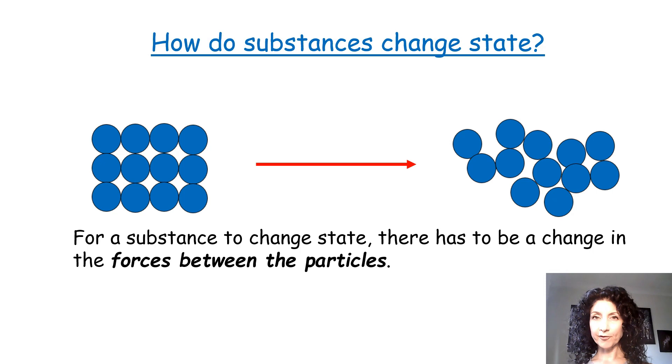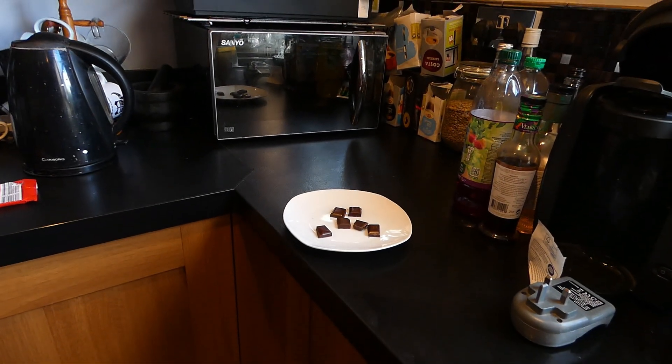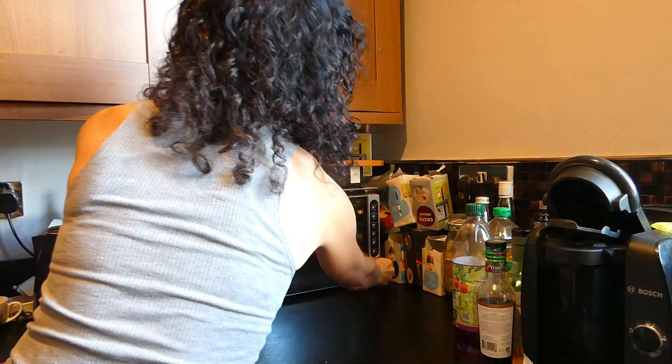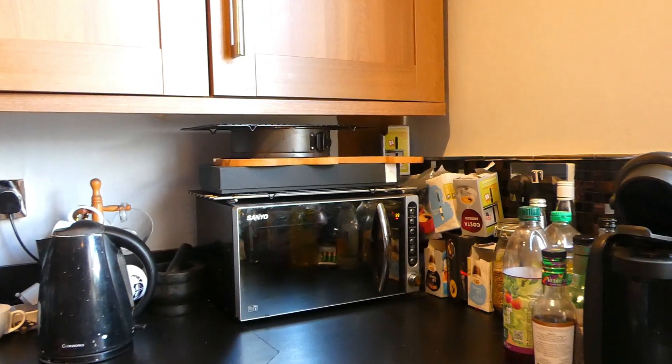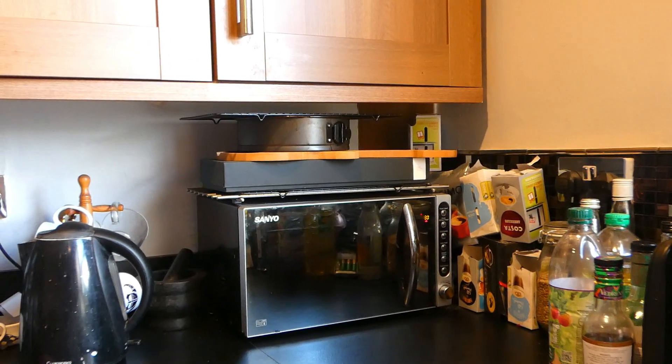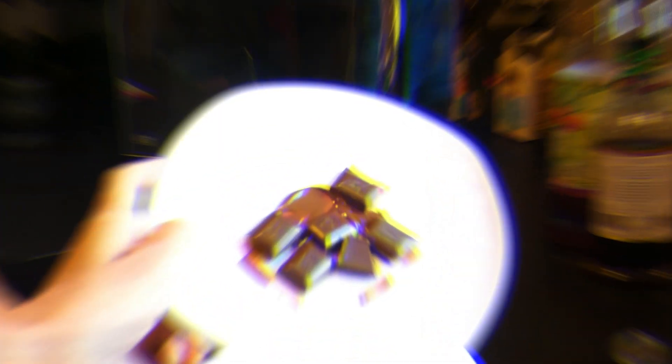For a substance to be able to change state, there has to be a change in the forces between the particles. This might be nice to demonstrate with a bar of my favourite chocolate. Quick quiz. How would I turn this solid chocolate into a liquid? I could easily do this by heating it. Hello, microwave. Let's pop it in. We'll give it 40 seconds. While this is doing, I want you to think about what is actually happening to the particles in that solid chocolate as it heats. Let's see if it's worked.